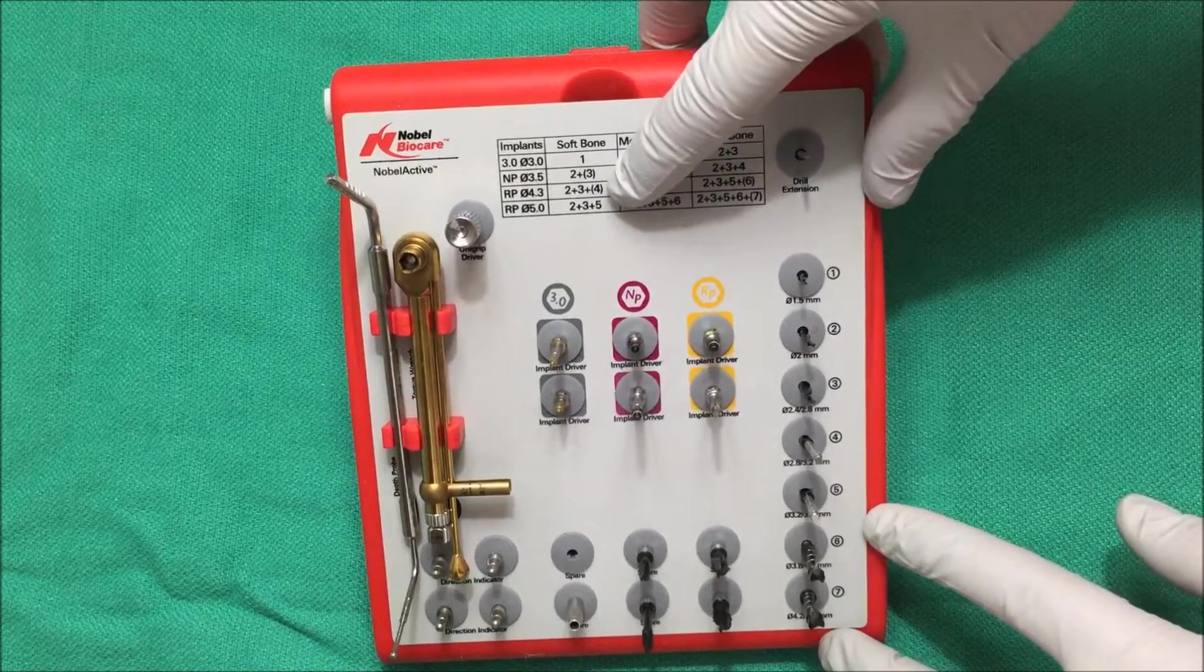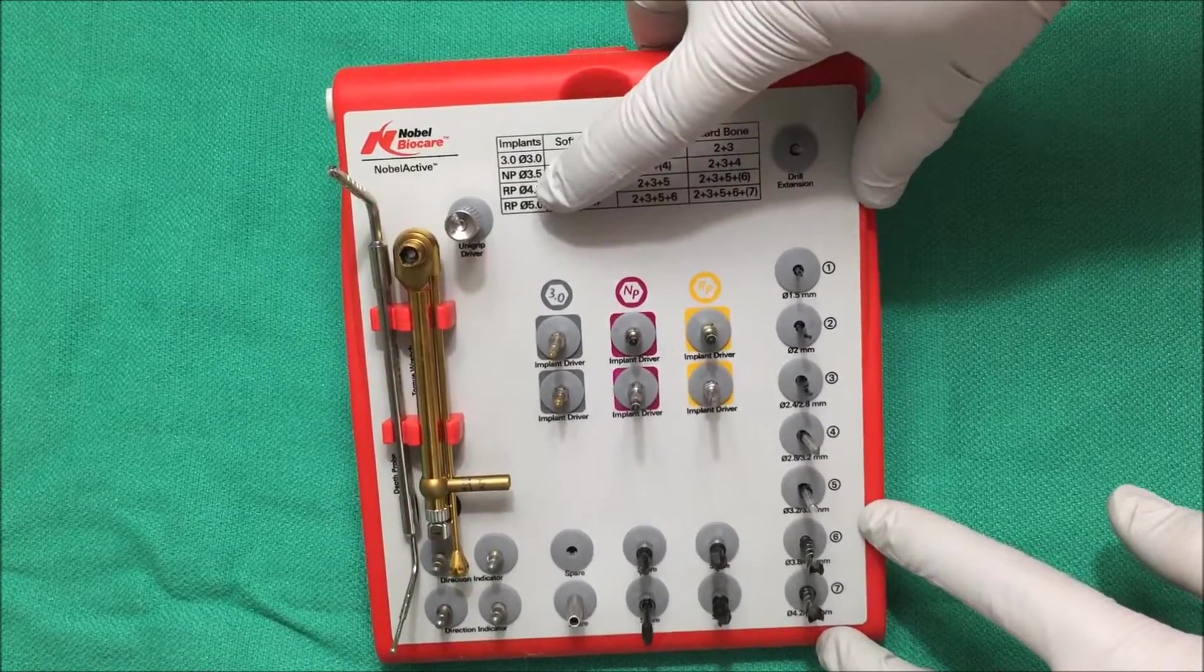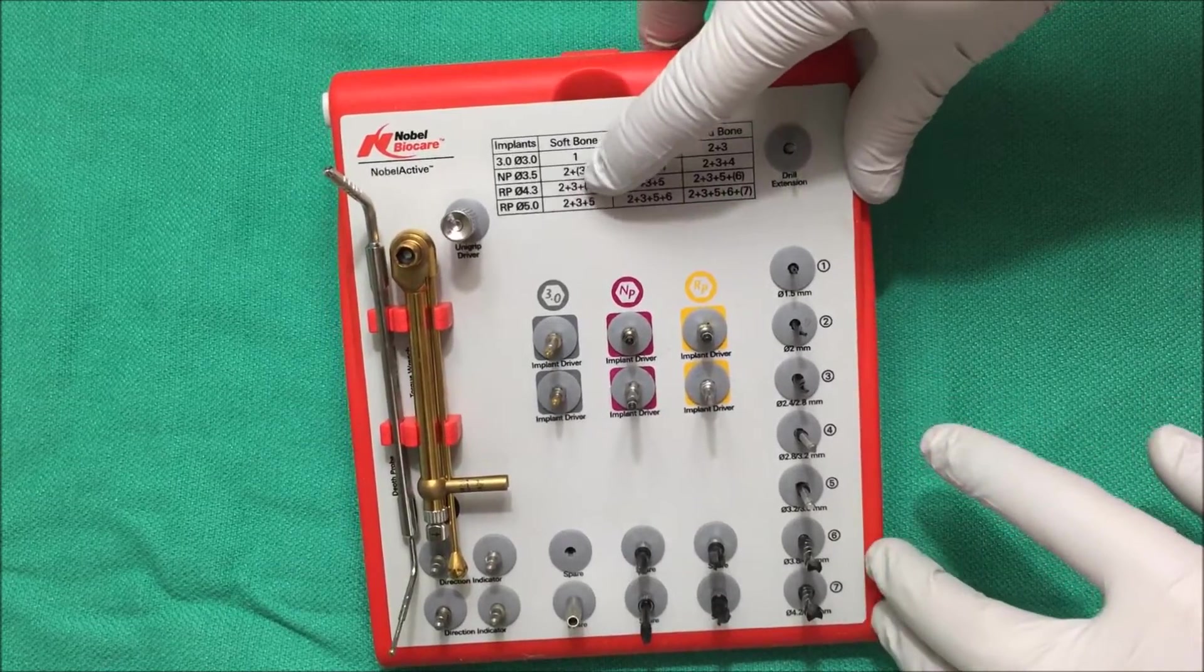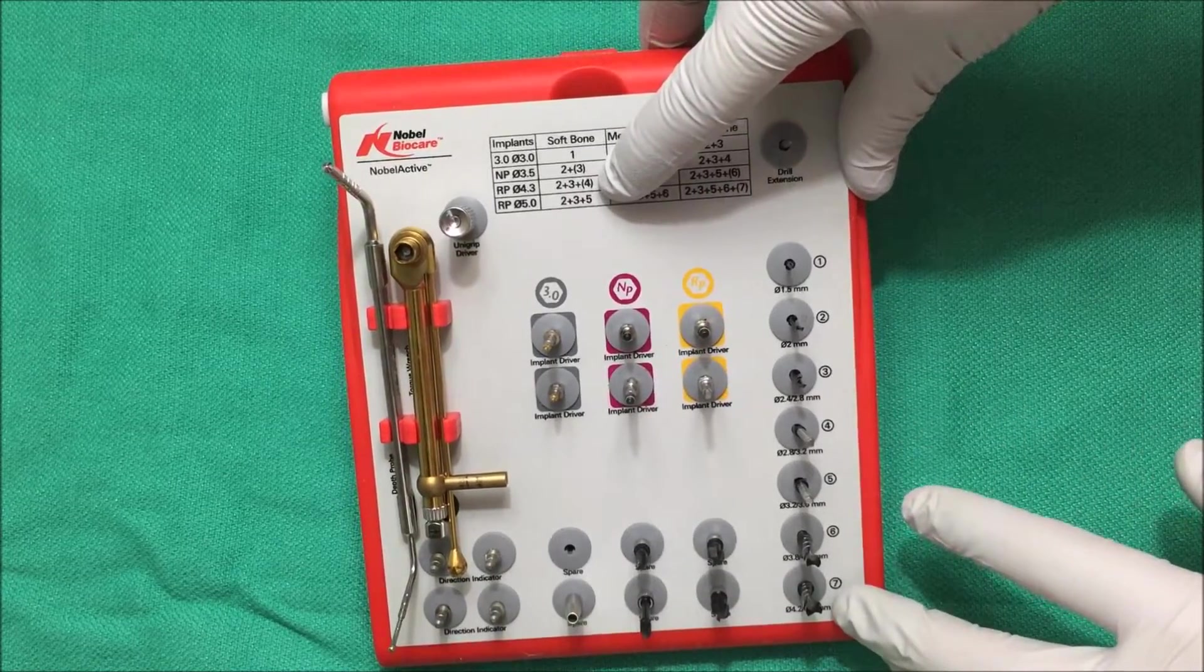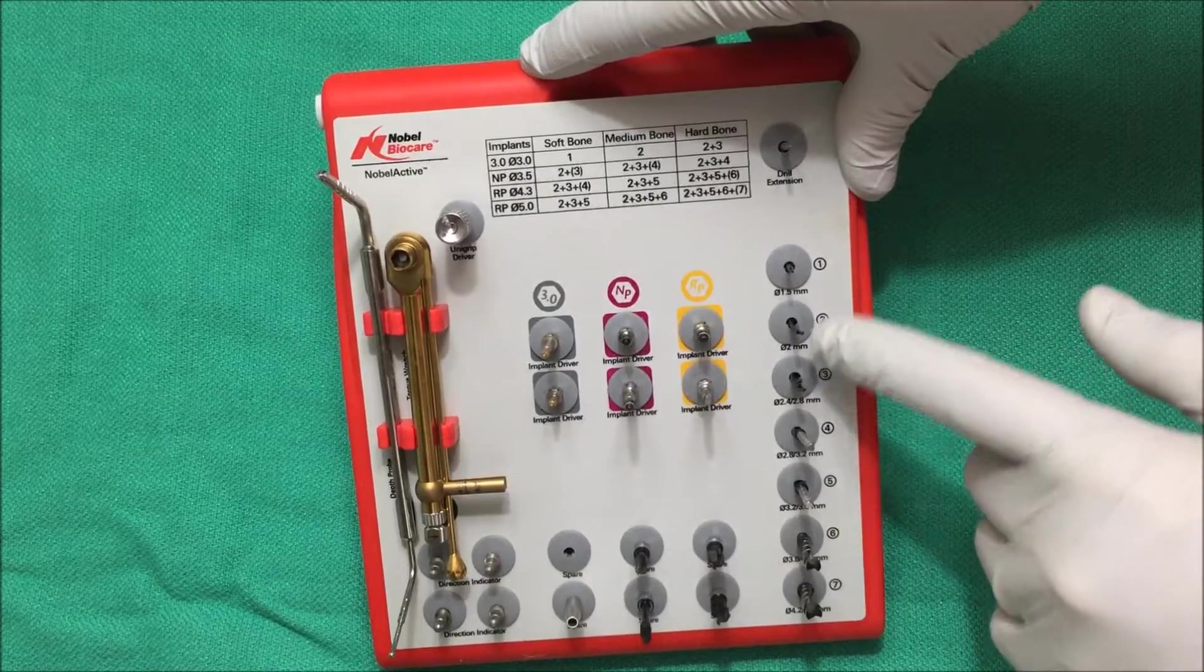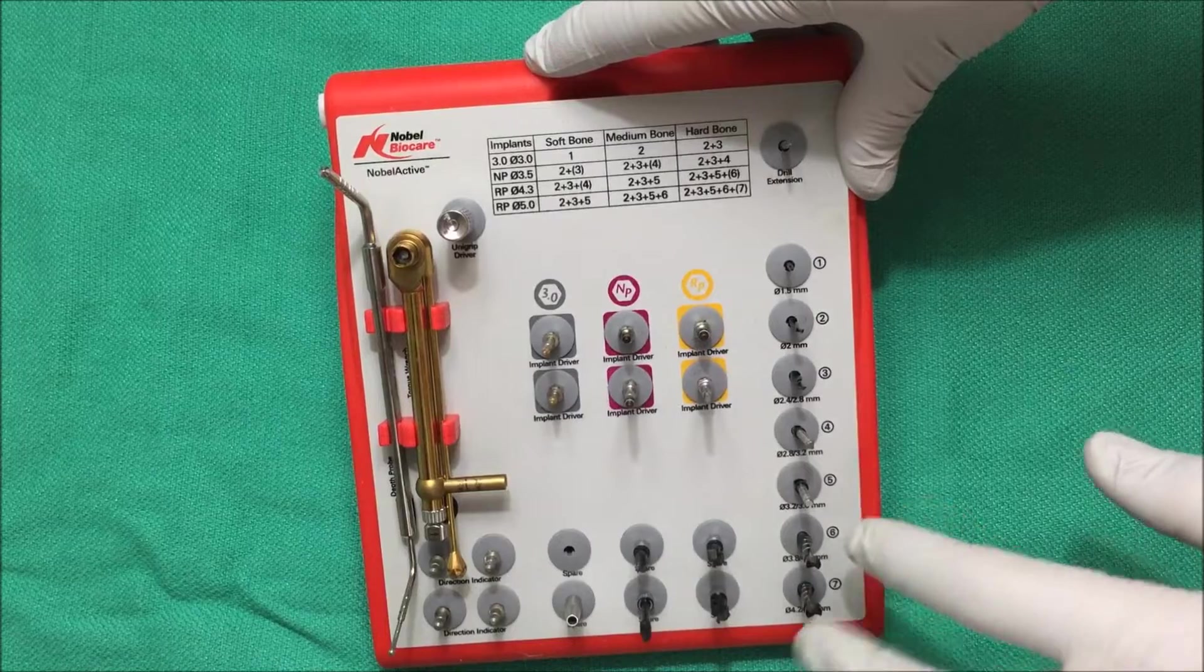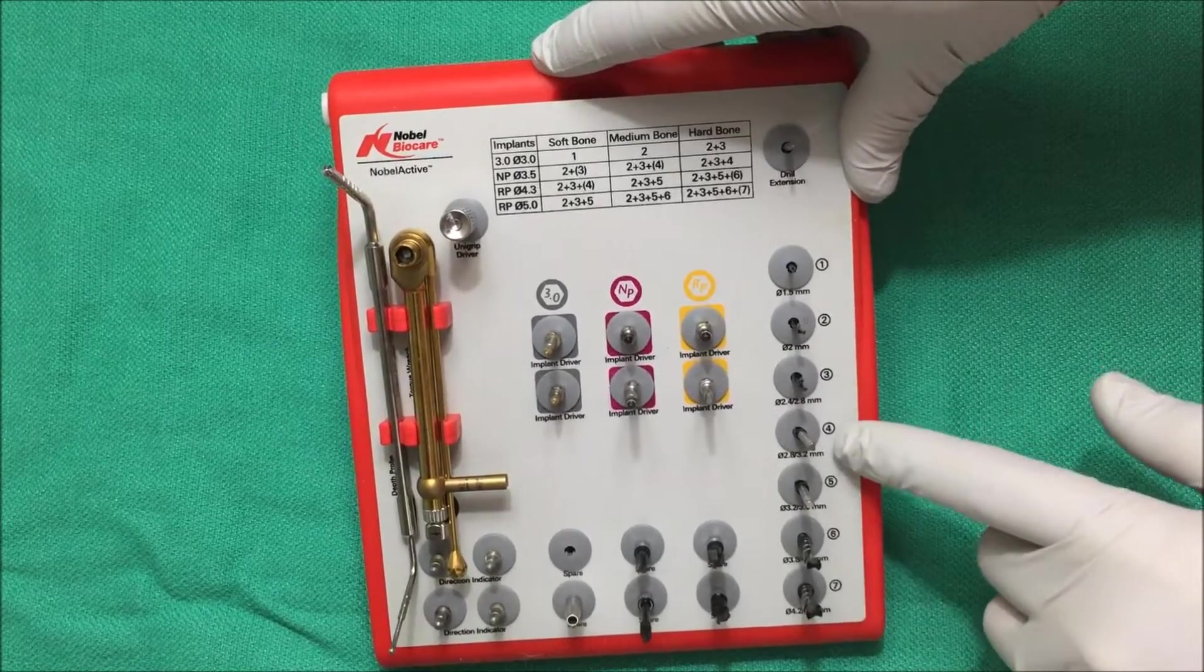So you might be wondering what these parentheses mean. So for example in regular platform 4.3 in soft bone it says 2 plus 3 plus parentheses 4. That means you're going to use drills 2 and 3 and then you're going to use drill number 4 but only to break the cortical bone. You're not going to go to full depth with drill number 4.